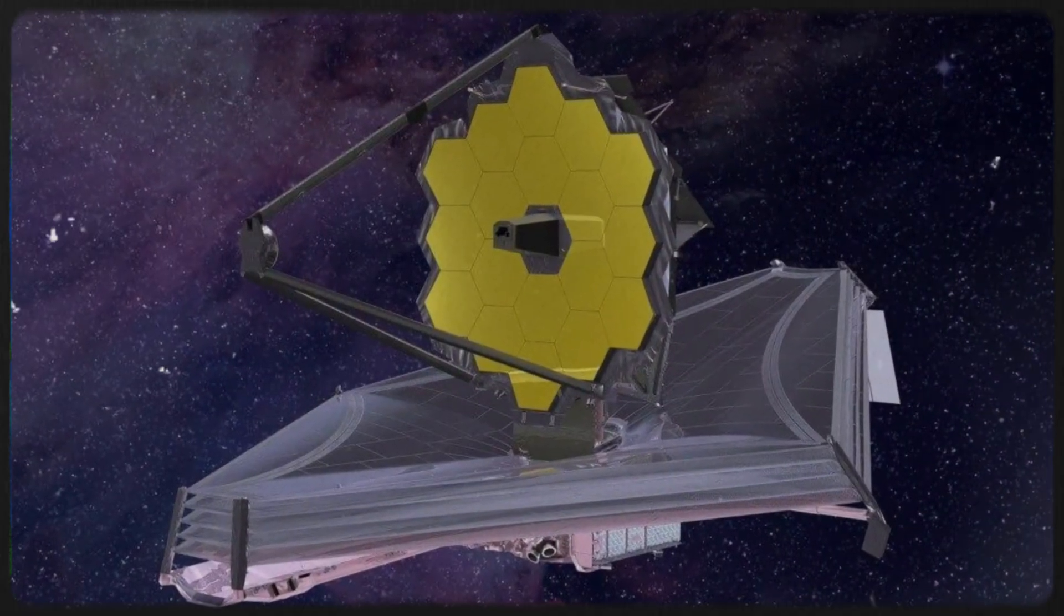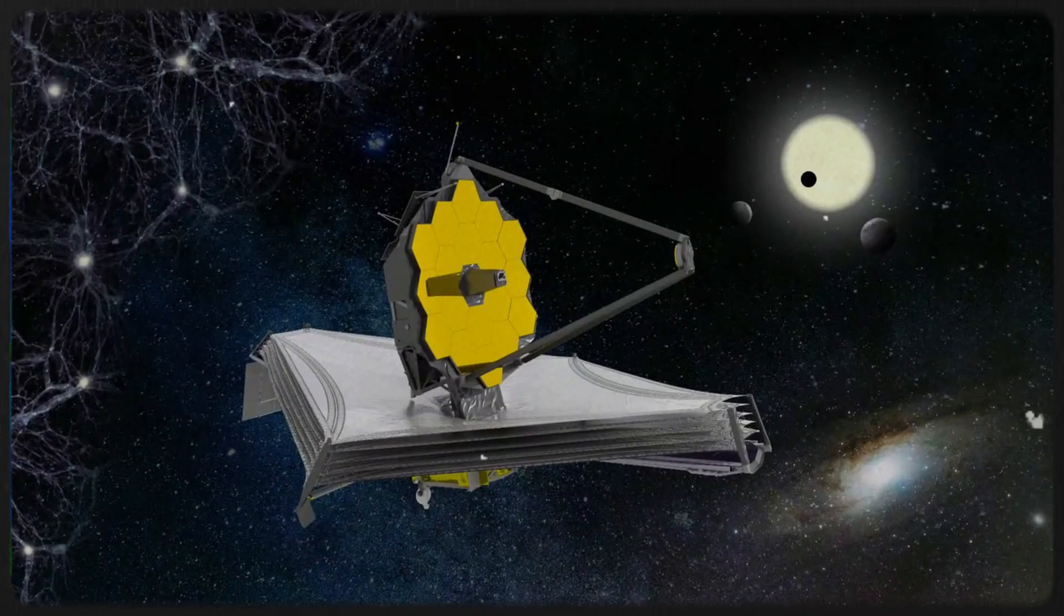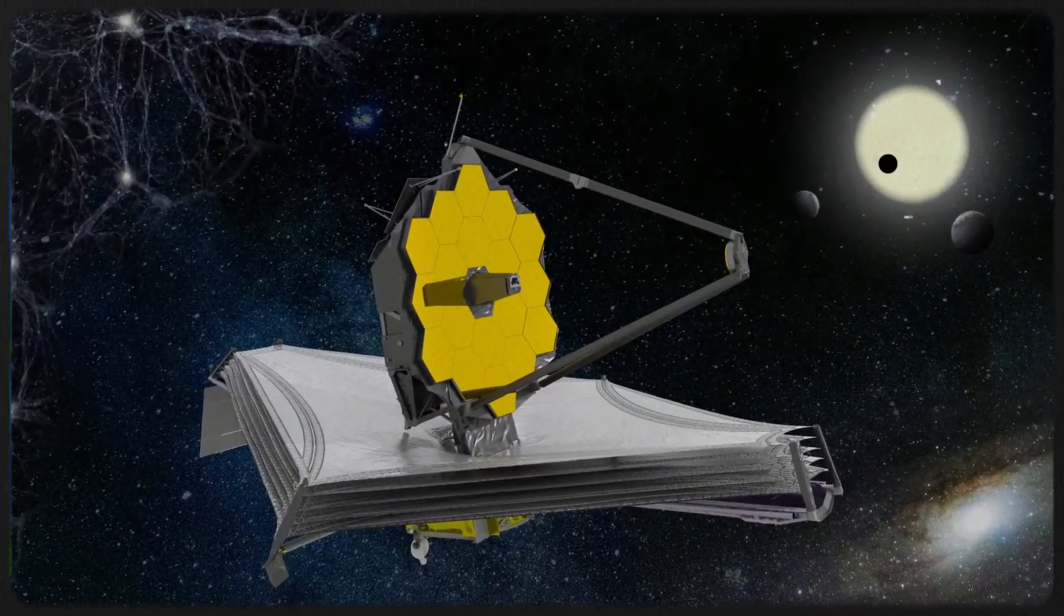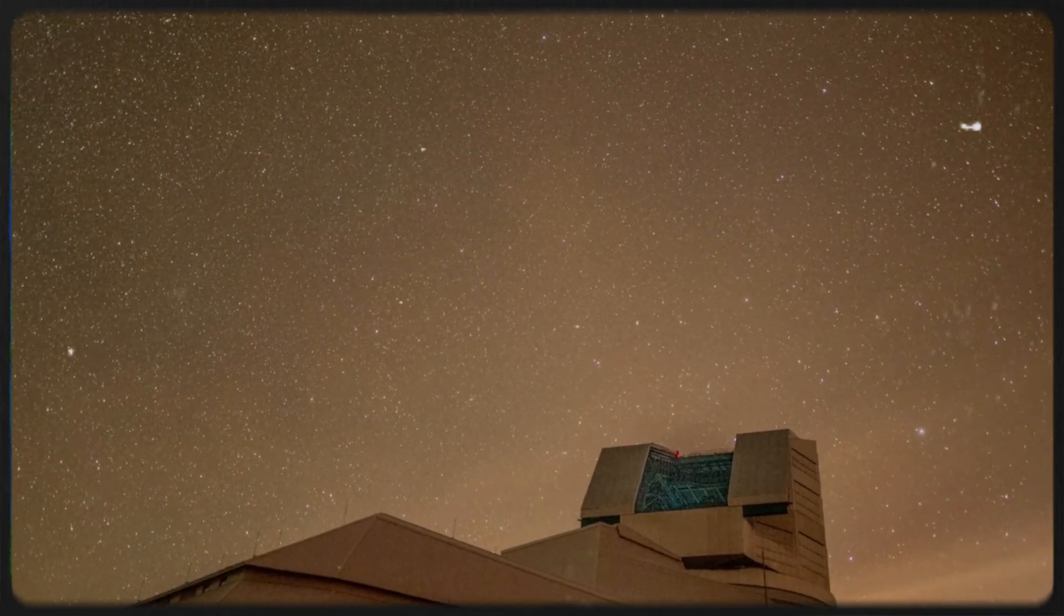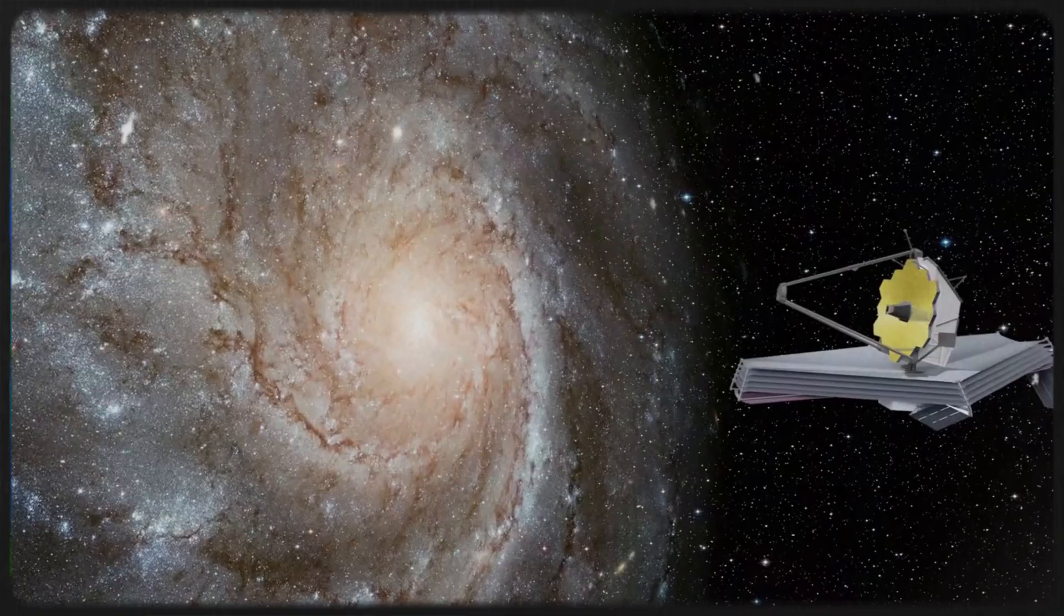Enter the James Webb Space Telescope, humanity's sharpest eye in the cosmos. In early August, Webb returned further revelations, recording a mass loss rate from 3i/Atlas of roughly 150 kilograms every second hurled into space at 440 meters per second.